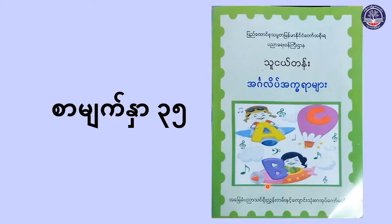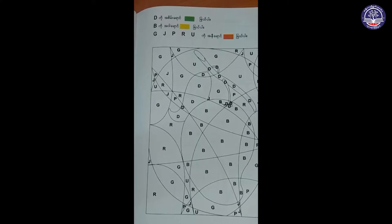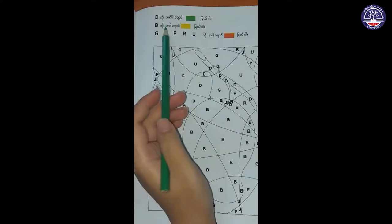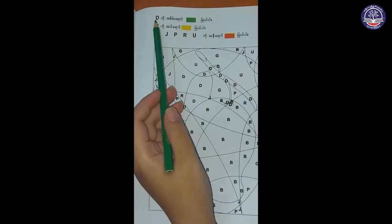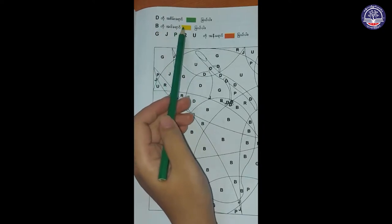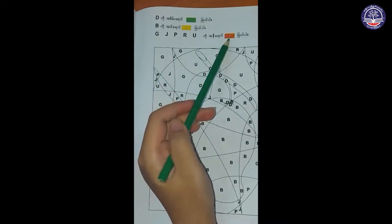This time, we are going to do something in the textbook. Please turn to page 35. Today we are going to do some revision on letters D, B, G, J, P, R, and U. Let's look at the instruction. Letter D has to be colored green. Letter B, yellow. And letters G, J, P, R, U — red.